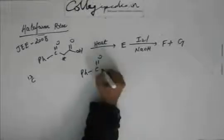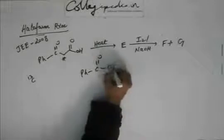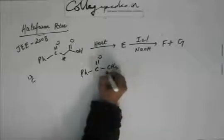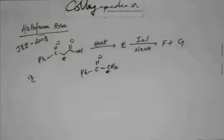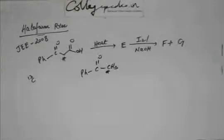E will be reported as the major organic product, and that will be acetophenone with this carbon bearing the asterisk mark. This carbon is the isotopic carbon C13. So E has been identified very well.